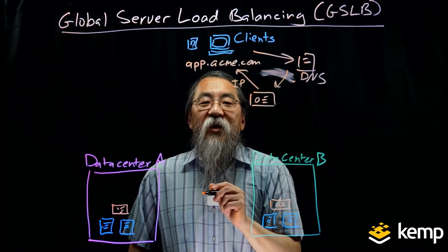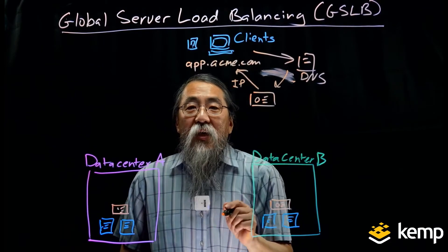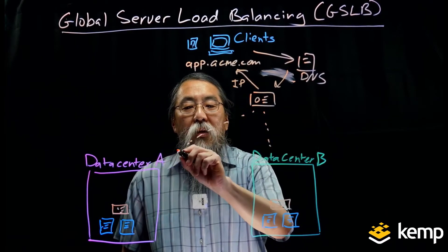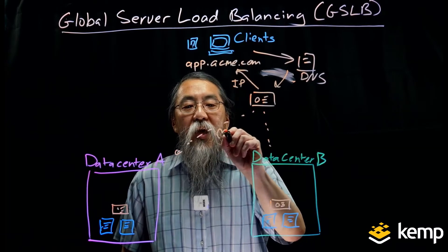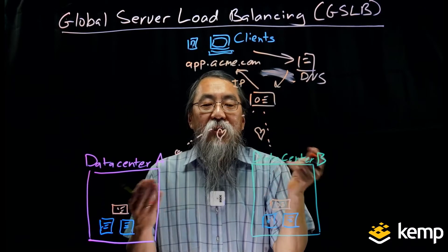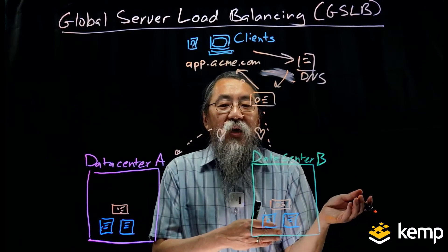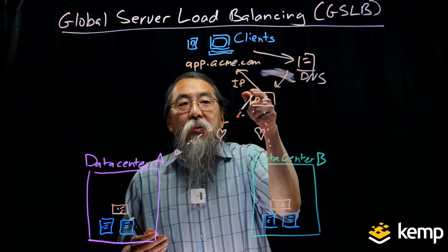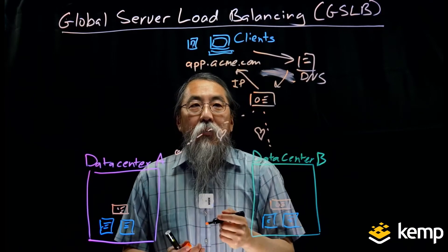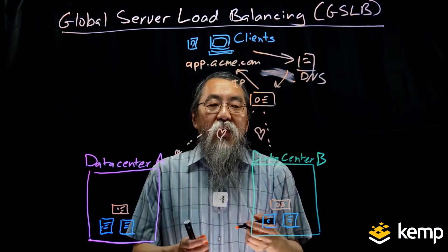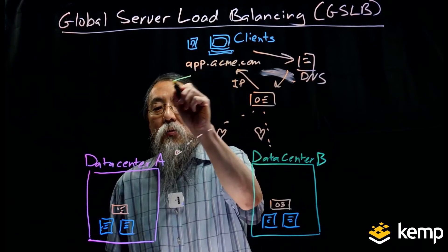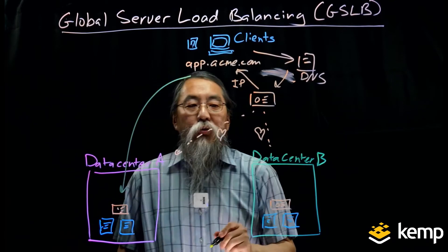This GSLB device is going to be doing health checks to the two data centers to confirm they are healthy. If they are okay, it makes a decision based on the algorithms you provide. It will give out IP address A if it wants the client to go to data center A, or IP address B if it wants the client to go to data center B. Then the client makes its connection to the appropriate data center.